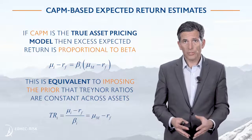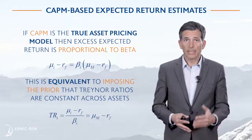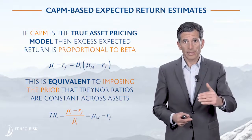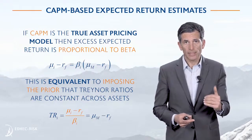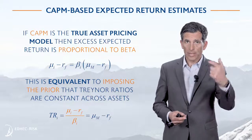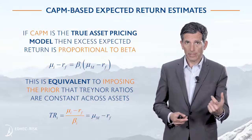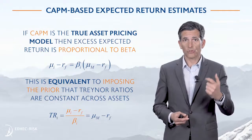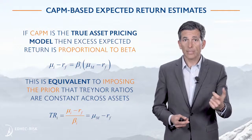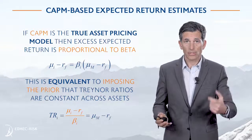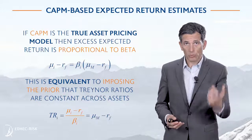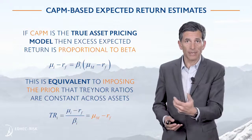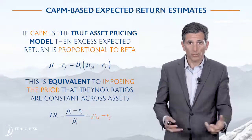This equation has a very simple implication. It says that mu_i — the expected return on the stock minus RF, the risk-free rate — divided by beta_i, the beta of the stock, gives a ratio known as the Treynor ratio. The CAPM predicts that the Treynor ratio is going to be exactly the same for all stocks, and that quantity will be the market risk premium, mu_M minus RF — the same across all stocks.